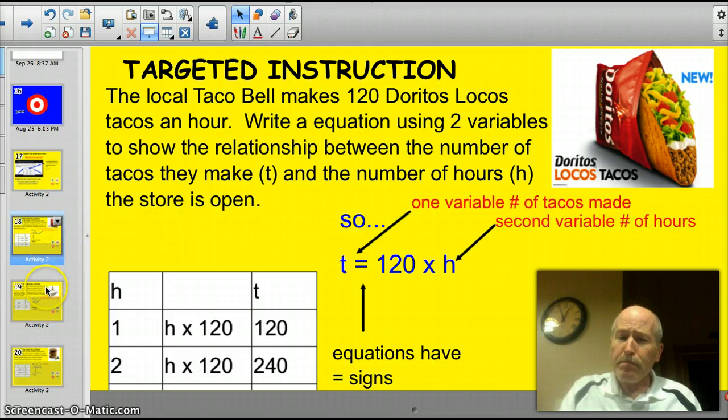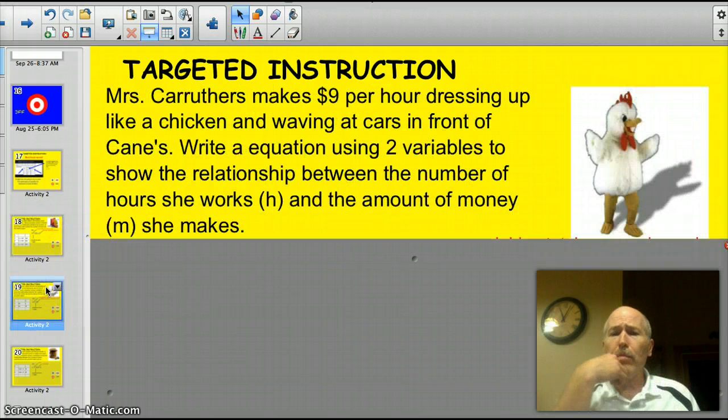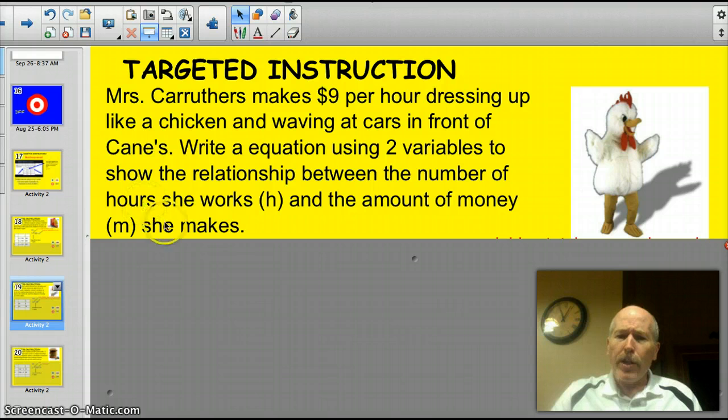All right, I'm going to have you try one. Here's one here about Mrs. Crothers. Mrs. Crothers makes $9 per hour dressing up like a chicken and waving at cars in front of canes. It's not dignified, but it pays the bills. Write an equation using two variables to show the relationship between the number of hours she works, H, and the amount of money she makes, M. Okay, remember the three most important things? Numbers, here's $9. And the two variables, H and M. Pause it and see if you can figure out what it would be.